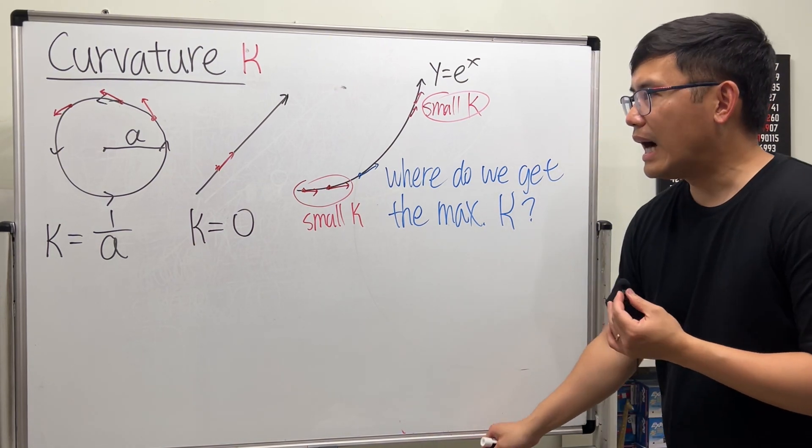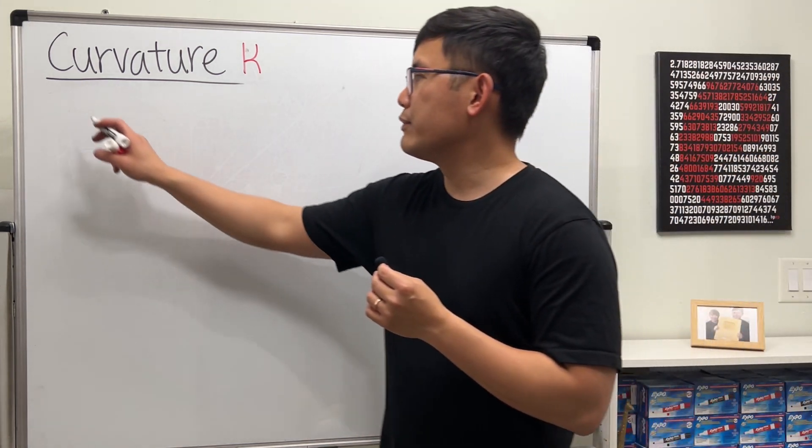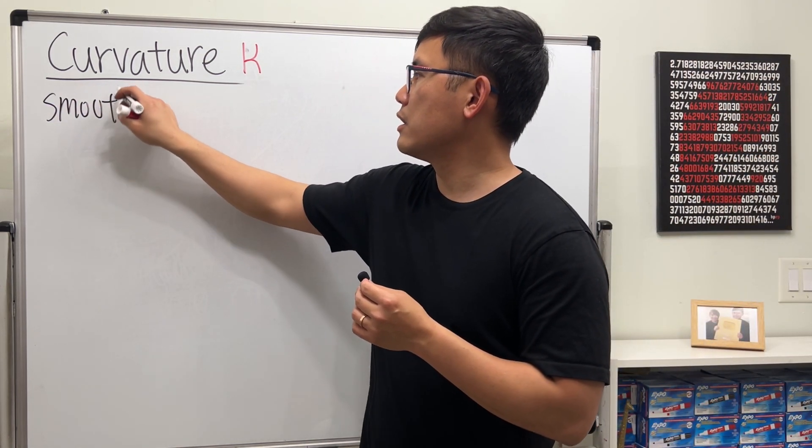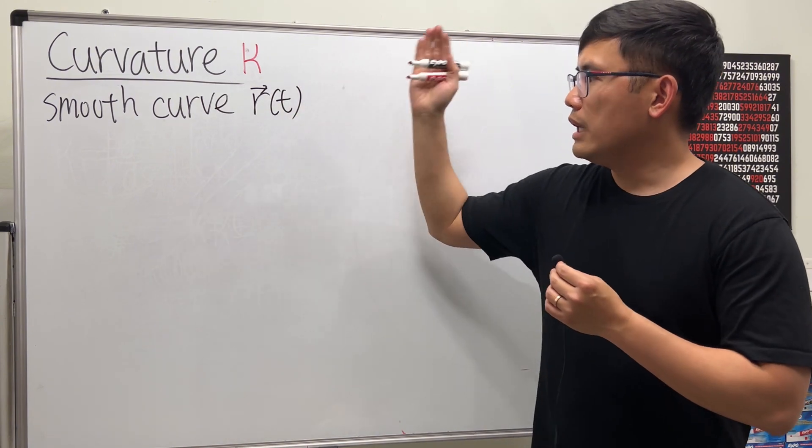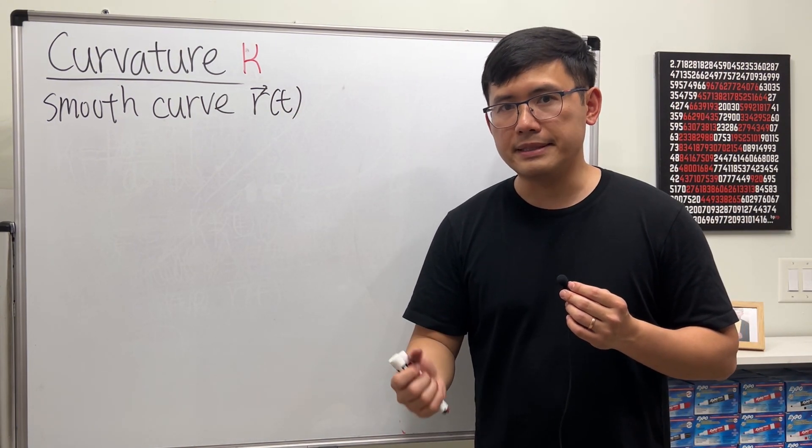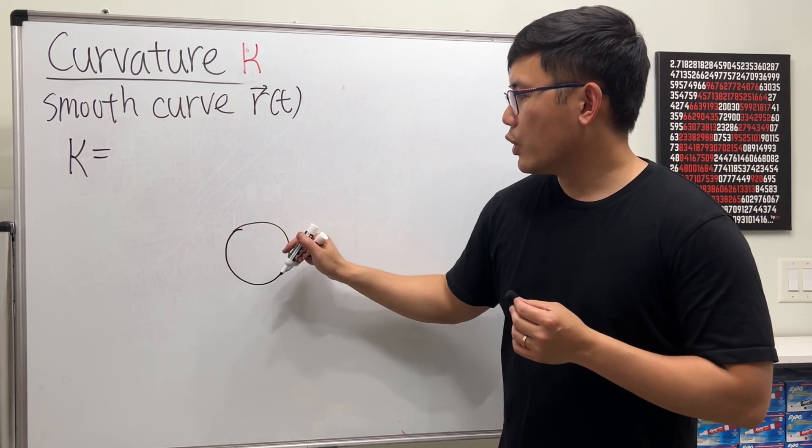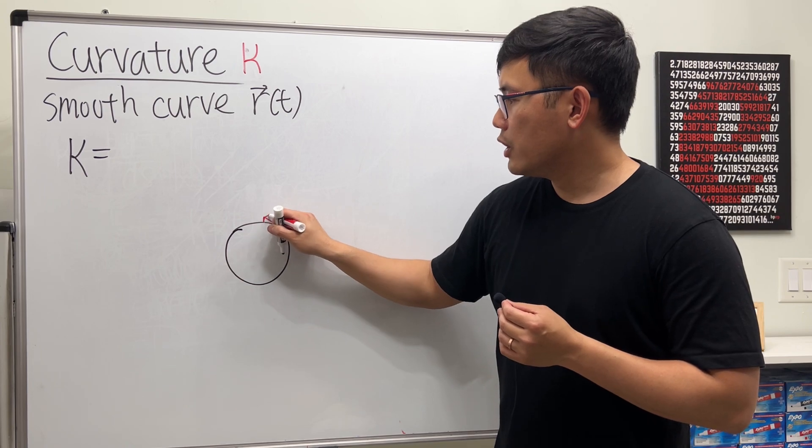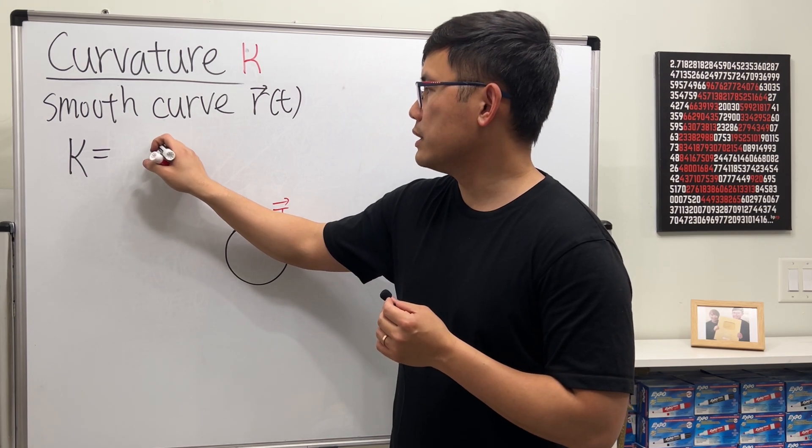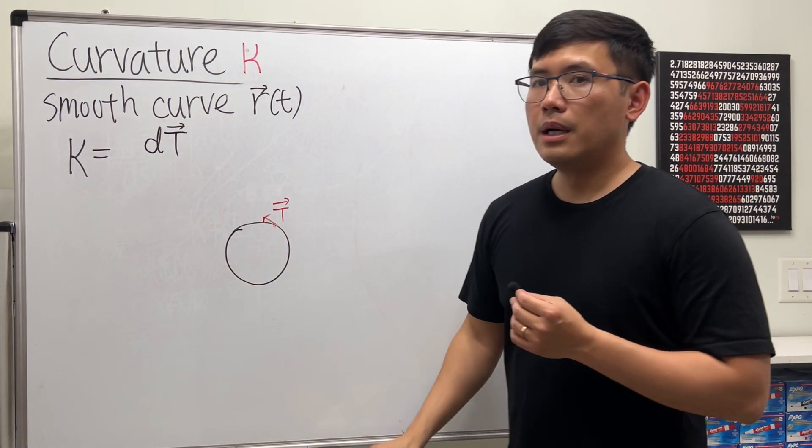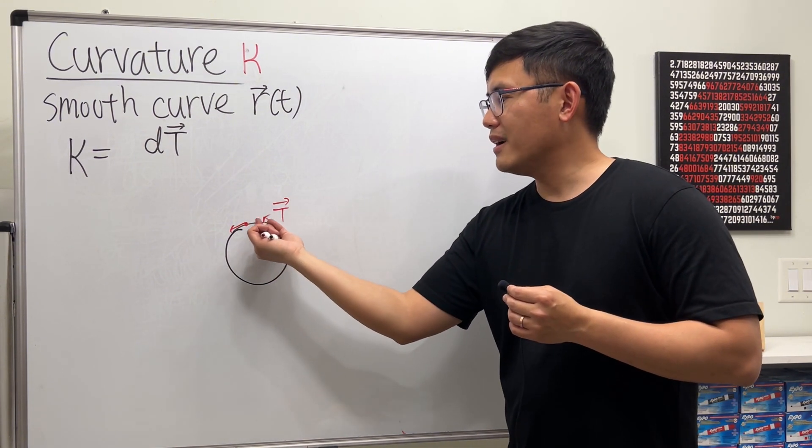Now how do we calculate the curvature? We will have to first have a smooth curve, meaning the curve is differentiable and all the good stuff, and that's written as r of t. This can be in a 2D plane or 3D space. Then the curvature is defined to be—remember earlier we need the unit tangent vector.